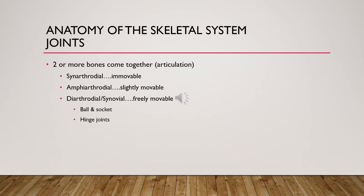A joint is where two bones of the skeletal system are joined together, also called articulation. Synarthrodial joints are immovable — such as the cranium — and become fused shortly after birth. Amphiarthrodial joints are slightly movable, such as the pelvis or vertebrae. Diarthrodial, or synovial, joints are freely moving — these include ball and socket and hinge joints such as our knees, elbows, and hips.